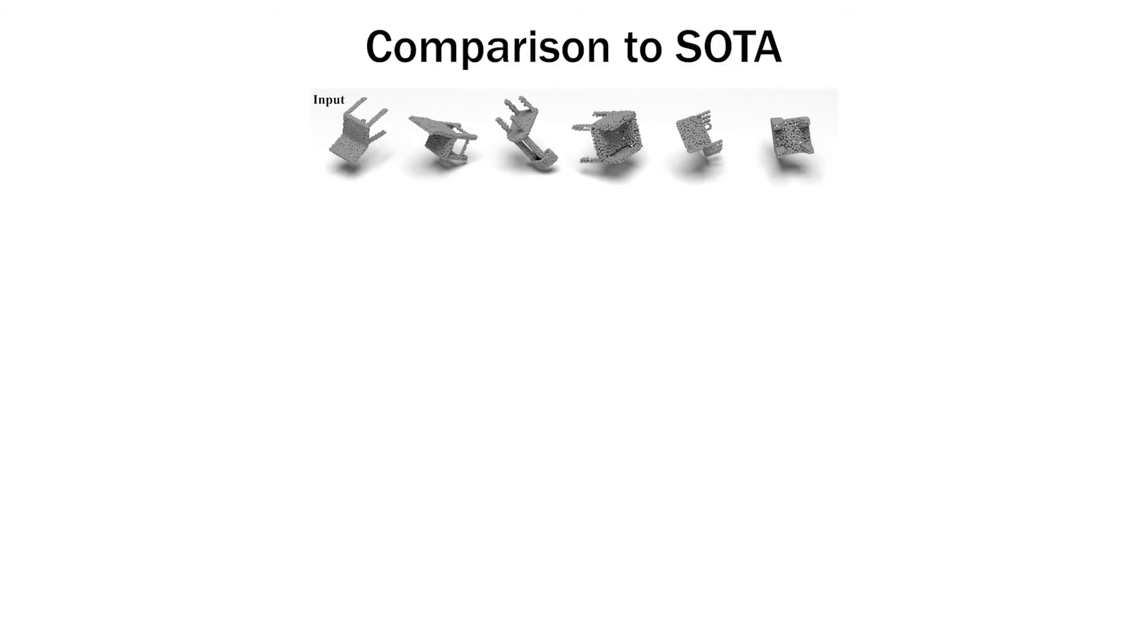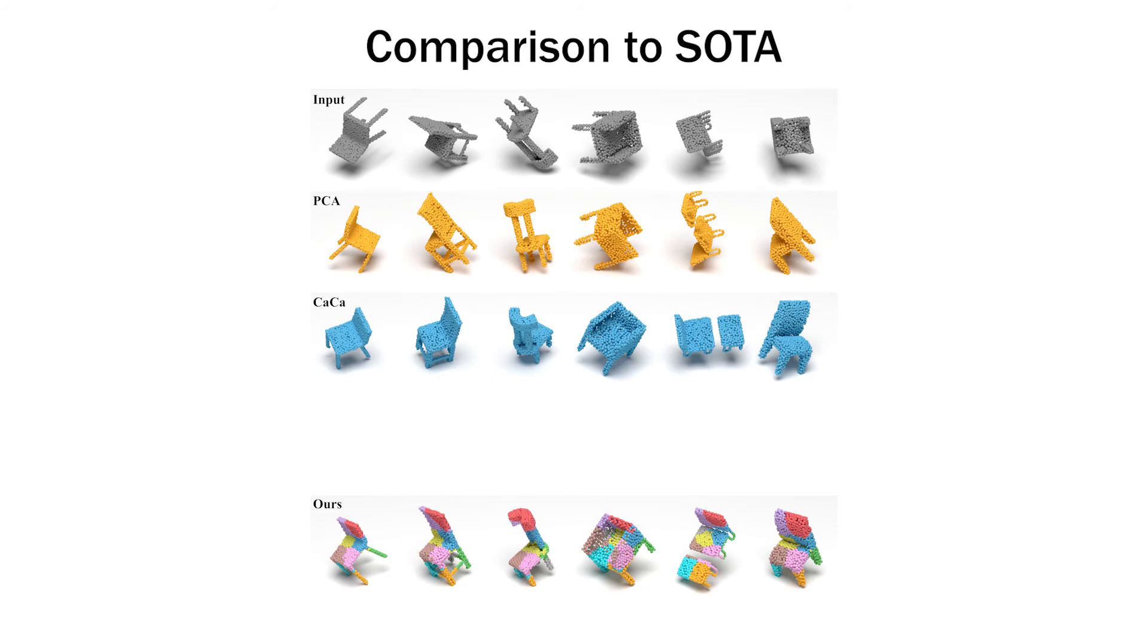Here, we compare results from our method trained on full chairs only against the state-of-the-art. We display the canonical point cloud predicted from our method, PCA, canonical capsules, and spherical CNNs. The alignment of chairs in the same orientation qualitatively shows the efficacy of our canonicalization.